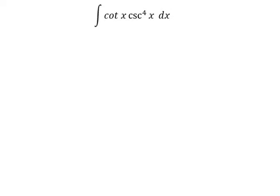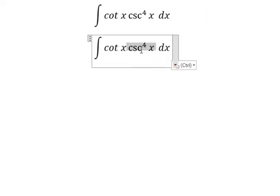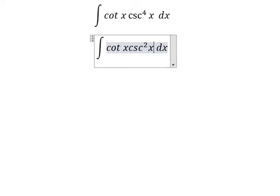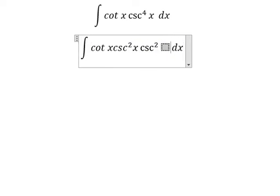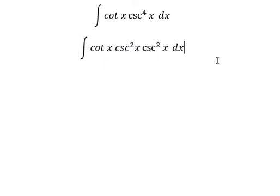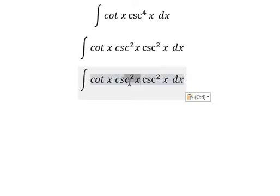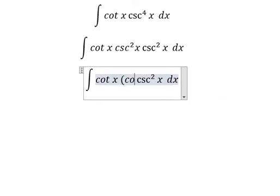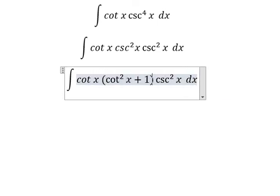I will show you how to integrate cot x csc⁴ x dx. We can write csc⁴ x as csc² x times csc² x. Next, csc² x can be rewritten as cot² x plus 1.